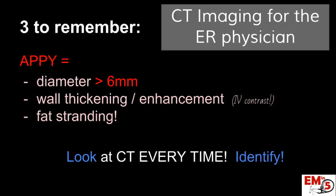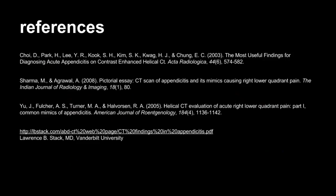Three things to remember for appendicitis imaging on CT scans: we're looking for a diameter greater than 6 millimeters, we're looking for wall thickening and enhancement — that's why we get IV contrast, so it lights up really well — and we're looking for fat stranding. Look for fat stranding anywhere on a CT scan when you're concerned about pathology. Thanks for joining us on EMN5.